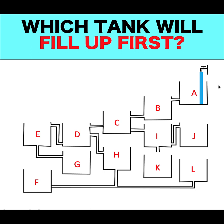Now let's solve this puzzle together. The moment we open this faucet, the water will flow like this. From tank A there's an outlet that overflows to tank B, and there's again another open outlet that's going to flow to tank C. Now here's the first trap — notice that the outlet here is closed.